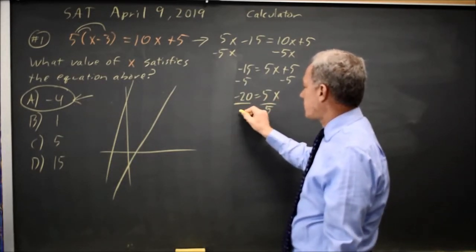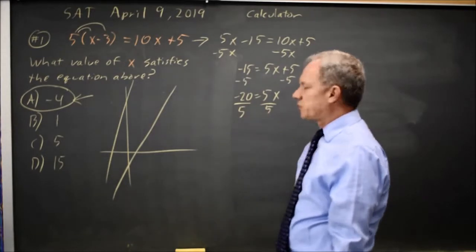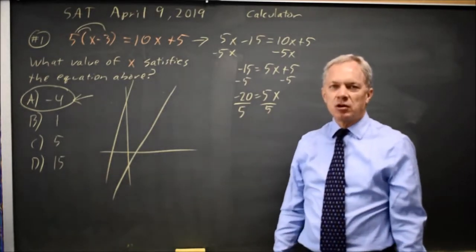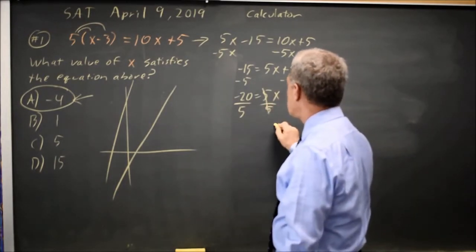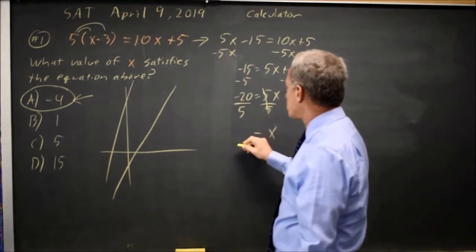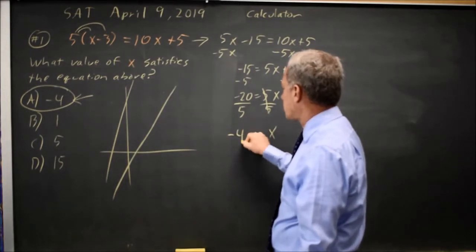If I divide the right-hand side by five, I'll also divide the left-hand side by five. Always do the same thing to both sides of any equation. So five over five is one. X equals negative twenty over five is negative four.